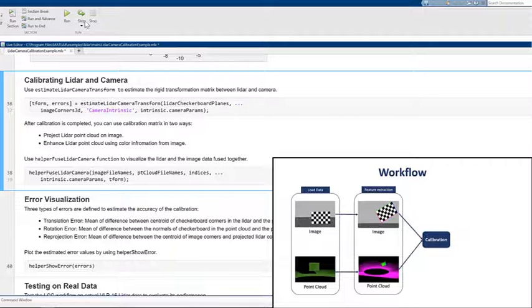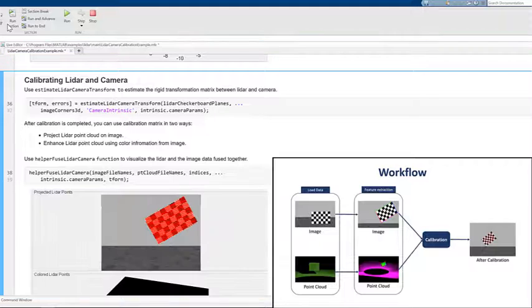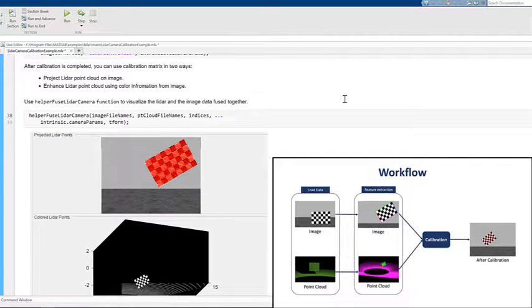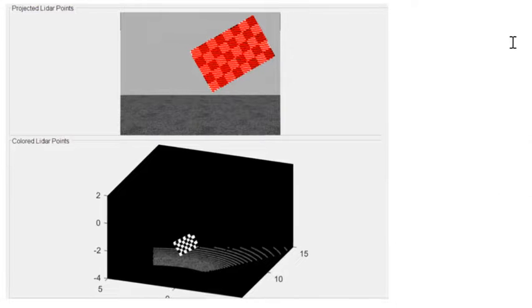We can visualize the calibration output by projecting LiDAR data on image or by projecting color information from camera on LiDAR data. You can see here that the output from camera and LiDAR aligns properly which means our calibration results are good.